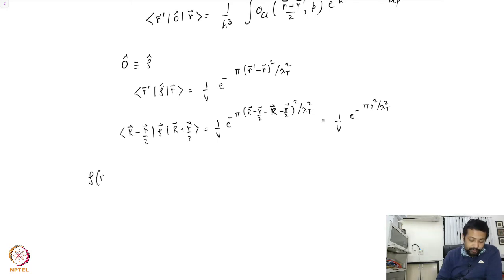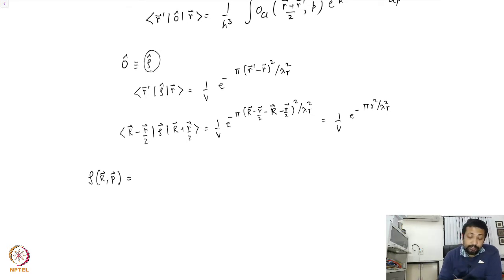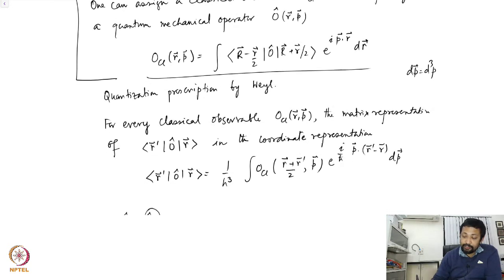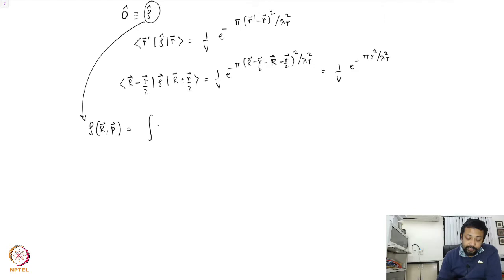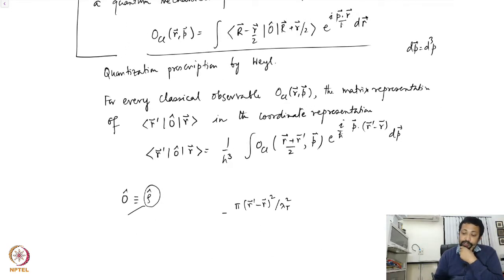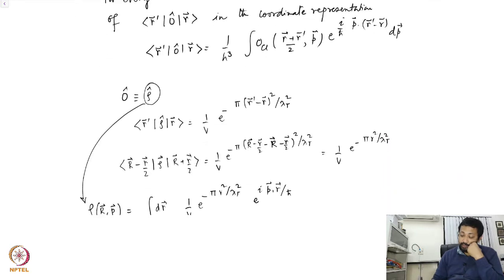Therefore, the classical observable corresponding to this quantum mechanical operator is ρ_Cl(R,P), and the Wigner transformation prescription gives us the integral of (1/V) e to the power minus π·r² over λ_T², times e to the power i·P·r/ħ, d³r. This is clearly a Gaussian — note there is an ħ in the exponent.